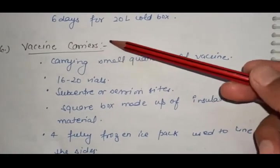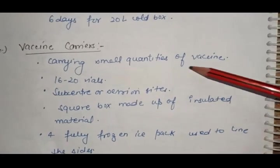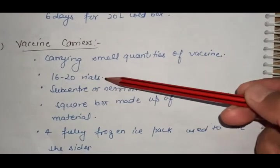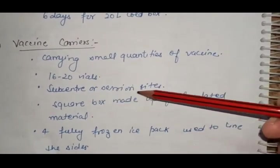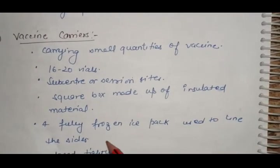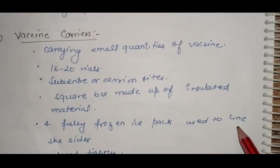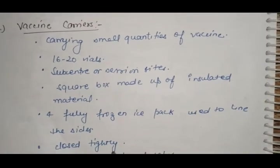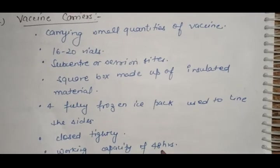Sixth is vaccine carrier. They carry small quantities of vaccine, 16 to 20 vials, to sub-centers or sessional sites. Square boxes made of insulated material with 4 fully frozen ice packs lining the sides. Working capacity of 48 hours.